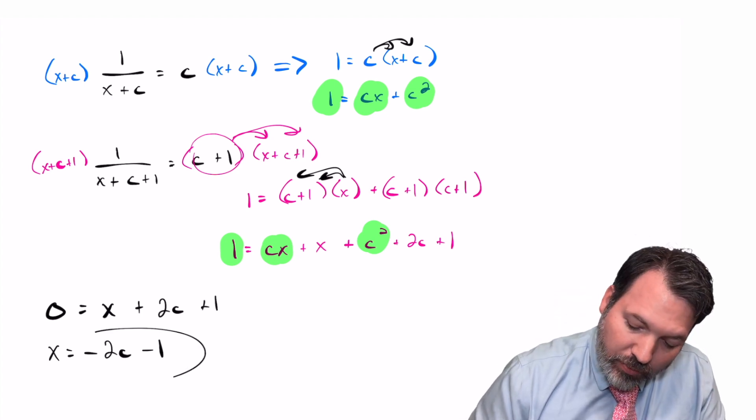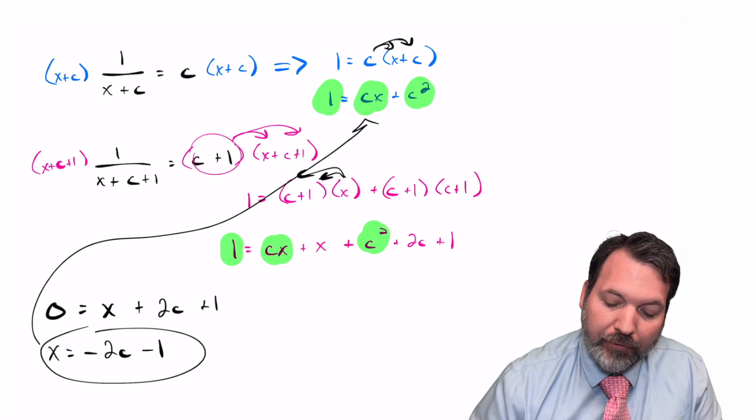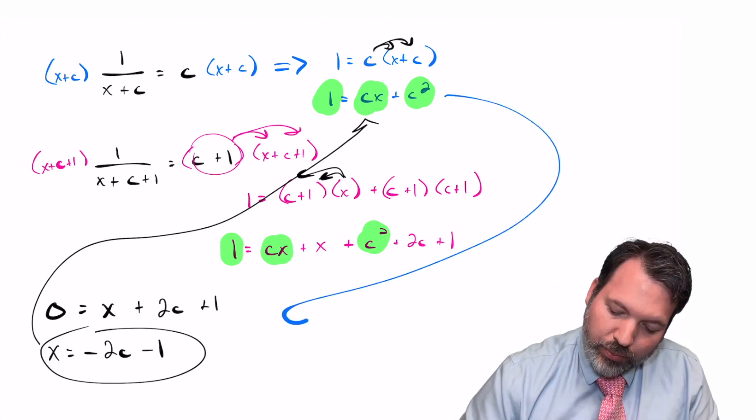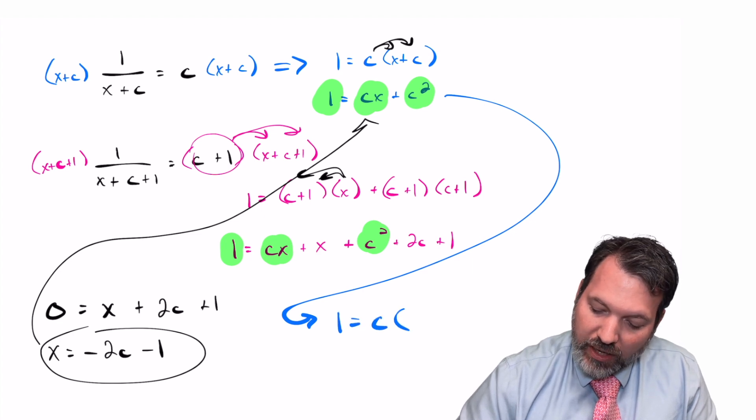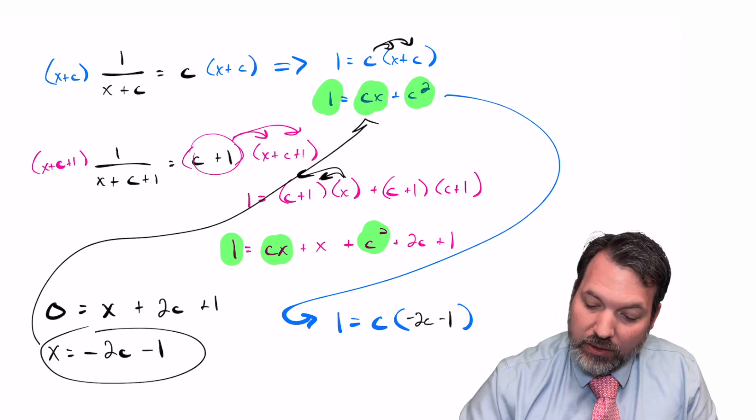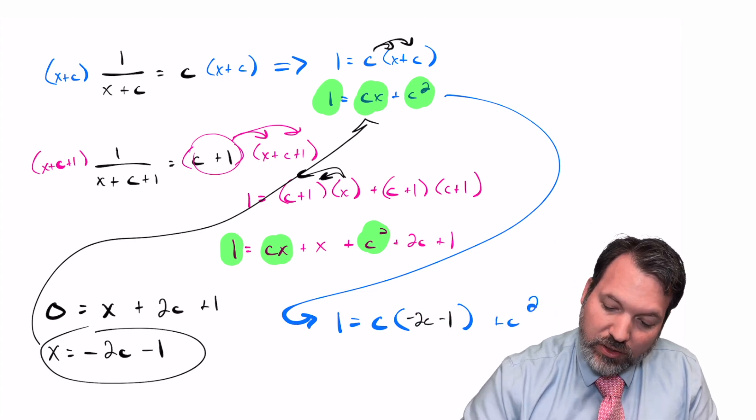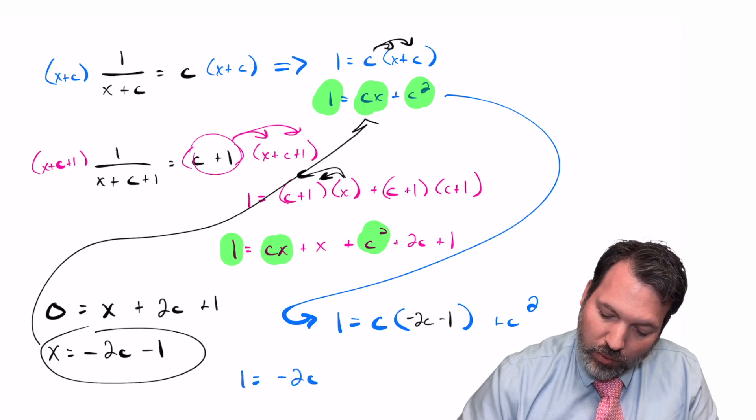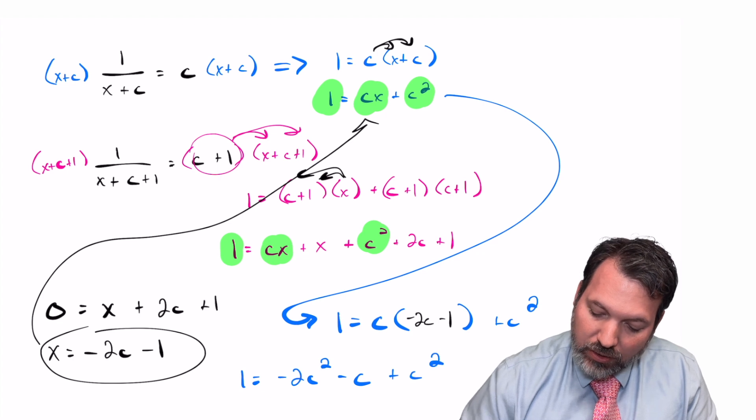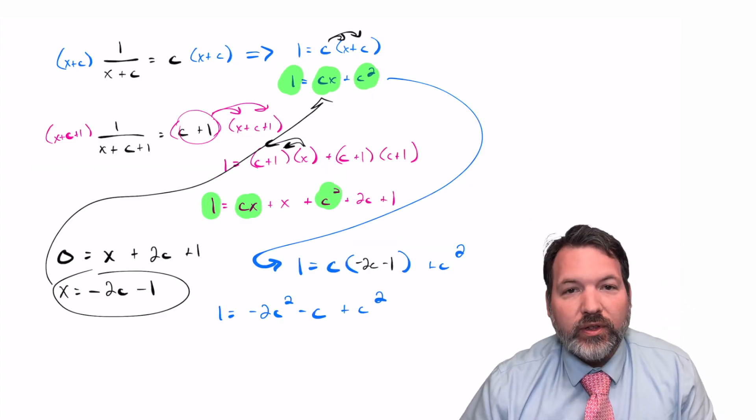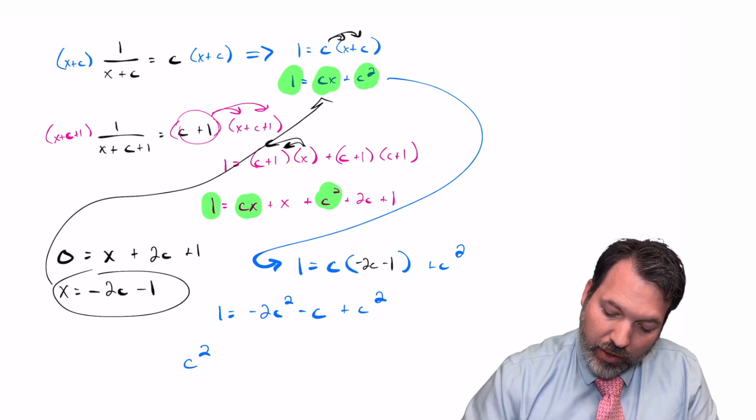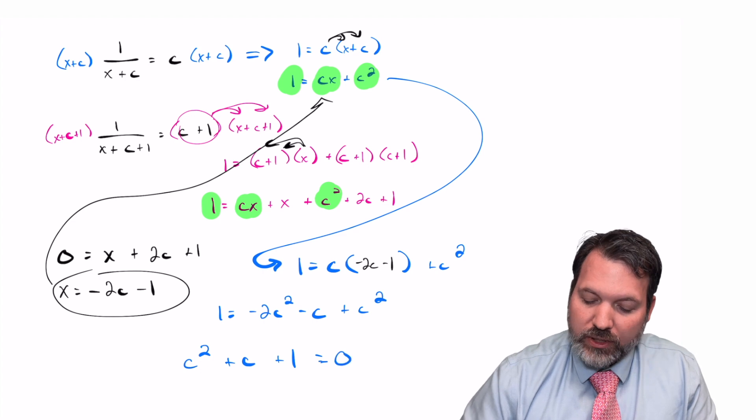The reason that's useful to me is I can now plug that back into our first equation and get an equation totally in terms of c. And so let's bring that over here. 1 equals c times, not x anymore, but what we know x is equal to, negative 2c minus 1, plus, of course, c squared. And then again, a little bit of distribution gives us 1 equals negative 2c squared minus c plus c squared, which finally, if we added everything over, got a zero on one side of this equation, would give us back positive c squared plus c plus 1 equals 0.